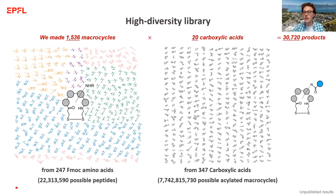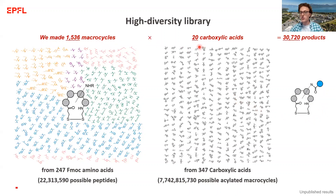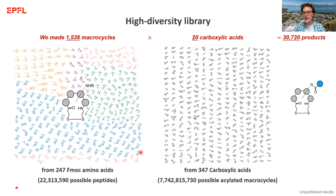We react each macrocycle with 20 carboxylic acids, but we pick those 20 as a random subset of 350. So we're using 350 carboxylic acids to diversify the base peptides, but any one carboxylic acid is only used about 80 times. We're not making all the combinations — we're making a random subset, but using a very large number of building blocks.